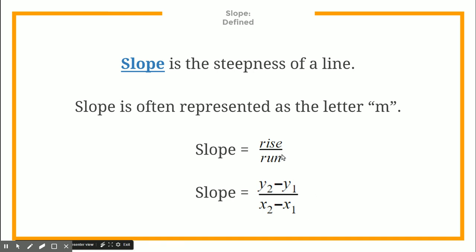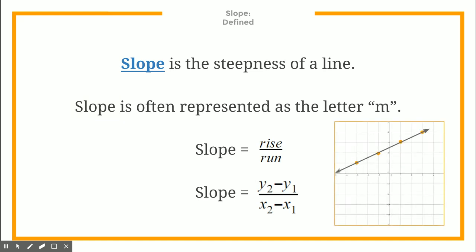All you're simply doing is subtracting the y's and subtracting the x's to get a certain fraction. This probably seems very strange right now, but once we start going over examples you're going to see that it's really easy. Here on a graph is a line that has a certain amount of steepness — this one actually isn't a very steep line, but in a little while you're going to learn how to calculate the slope and what number represents it.